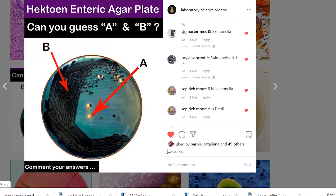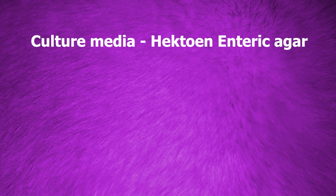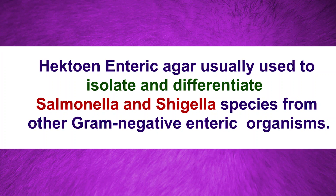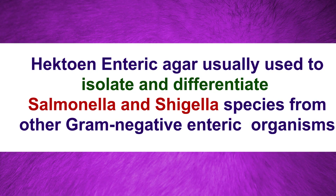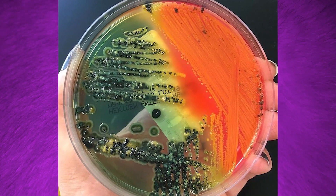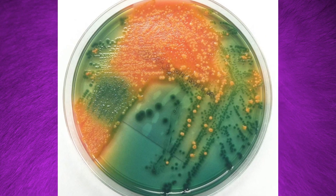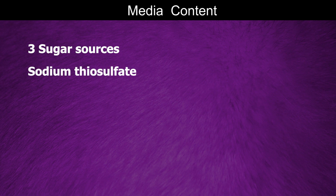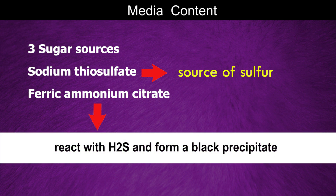Let's see what the correct answer is. The question mentioned this culture media is Hektoen Enteric Agar. Remember, this media is usually used to isolate and differentiate Salmonella and Shigella species from other gram-negative enteric organisms. However, because of various color production we can get an idea about a number of organisms. This media contains three sugar sources and sodium thiosulfate as a source of sulfur. Ferric ammonium citrate is added to react with hydrogen sulfide and form a black precipitate.